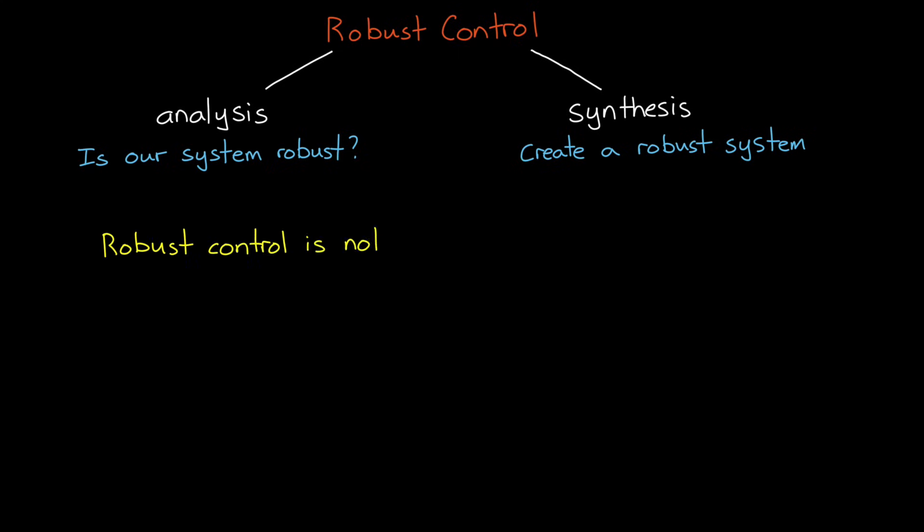Now the thing to note here is that robust control is not a specific type of controller like PID or full state feedback. Instead, it's a design method. It's a set of tools that allow us to choose PID gains, or choose full state feedback gains, or to tune some other controller so that it is robust.